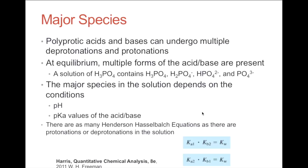One major idea in this chapter is determining the major species in a solution. Polyprotic acids and bases can undergo multiple protonations and deprotonations. At equilibrium, multiple forms of the acid and base are present. For example, a solution of phosphoric acid contains phosphoric acid as well as these other forms. The major species in the solution depends on the conditions, such as the pH and the pKa values of the acid or base.